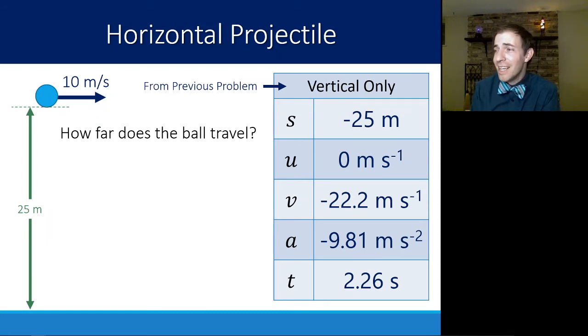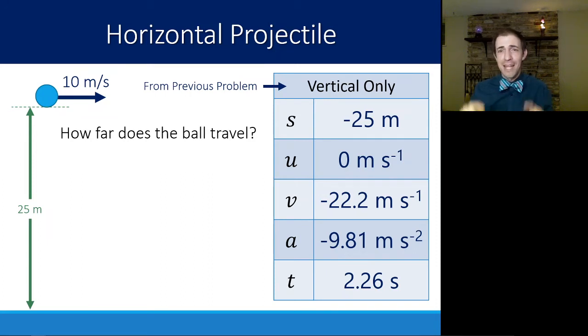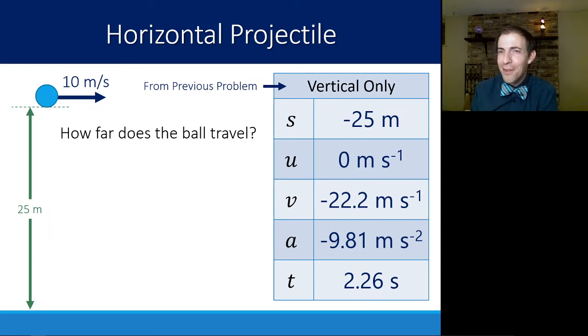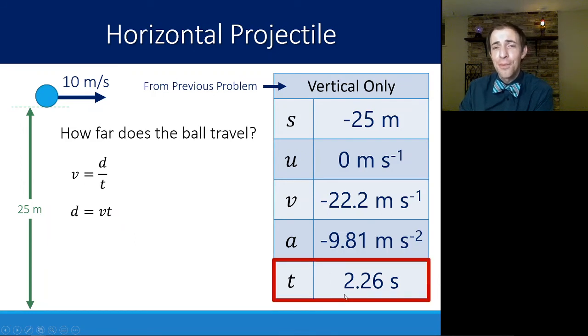But as we saw, it doesn't matter if it has a horizontal velocity or if you just drop it, it's going to be in the air the exact same amount of time. Those billiard balls hit the ground together, which means if we can calculate what it would be just to drop it, we know the time of this object as well. Even though its motion is slightly more complex, its time is still going to be this 2.26 seconds. Now the velocity is just distance over time. So if I wanted to figure out how far the ball travels, that's distance is equal to velocity times time.